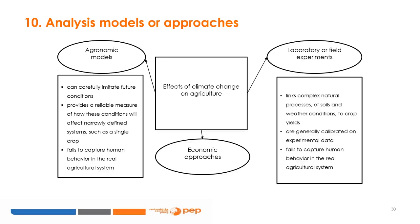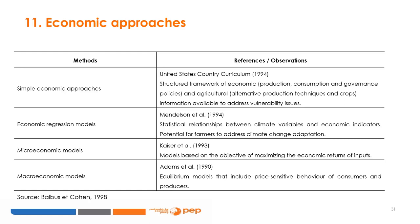Different approaches with different consequences are used to assess the impacts of climate change. The literature distinguishes between economic approaches, agronomic approaches, and laboratory or field experiments. Economic approaches are based on different methods. Simple economic problems involve revisions based on a structured framework of economic, production, consumption, and governance policies, as well as agricultural production techniques and alternative crops. We also have economic regression models — statistical relationships between climate variables and economic indicators — where adaptation of farmers to local climatic conditions is implicitly taken into account.